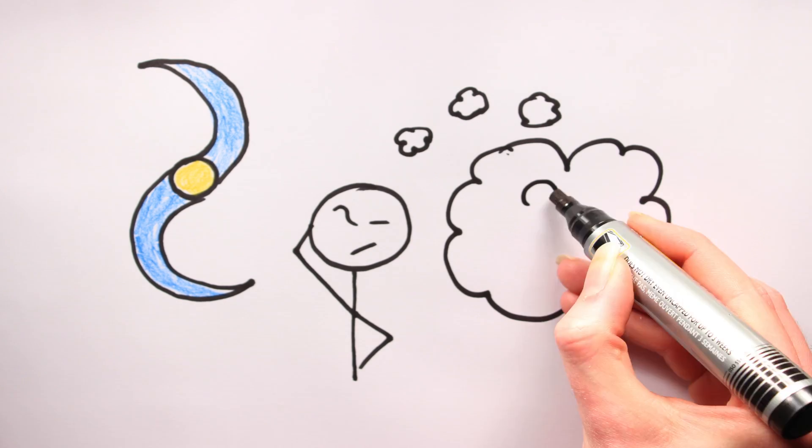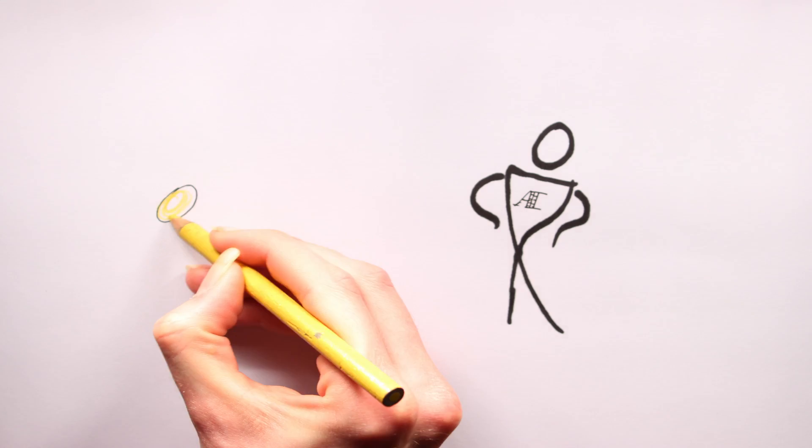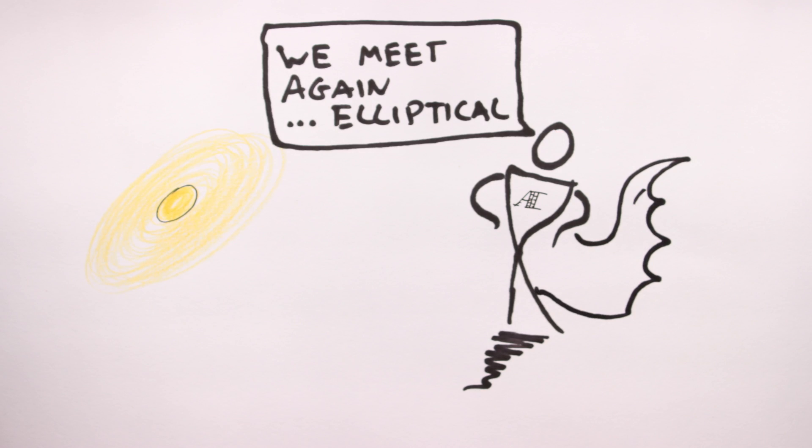So last time we talked about spiral galaxies, but are other types of galaxies habitable? Well, let's start with my old nemesis, the elliptical galaxy.